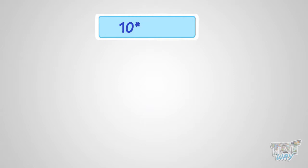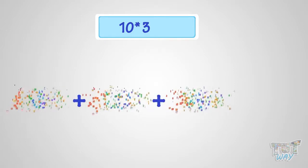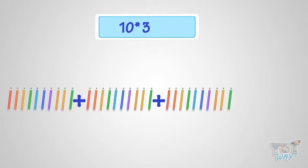What is 10 multiplied with 3? It is same as three sets of 10 pencils. So, it is 30 pencils. That is, 10 multiplied by 3 is 30.